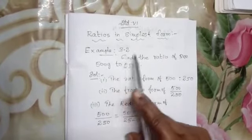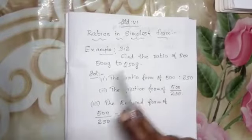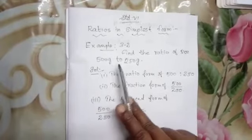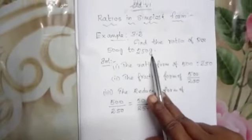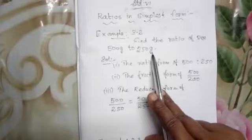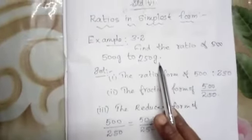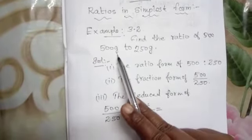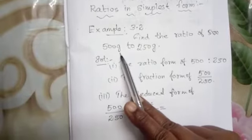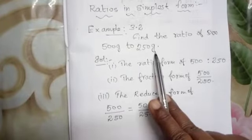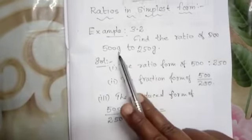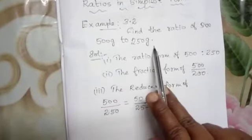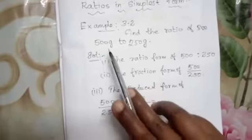Example 3.2: Find the ratio of 500 gram to 250 gram. First, check the unit. The unit of the first quantity is gram, and the second one is also gram — they are the same unit.